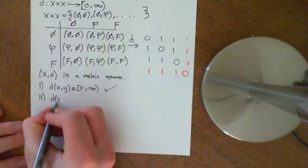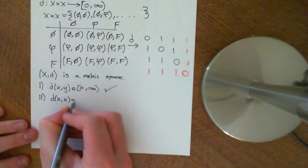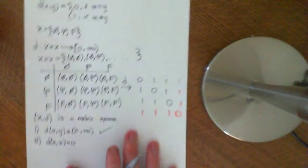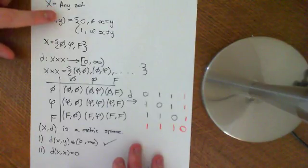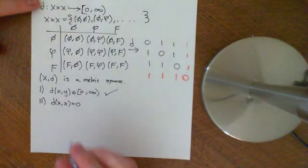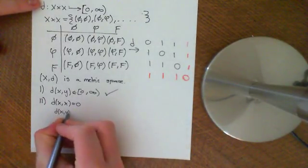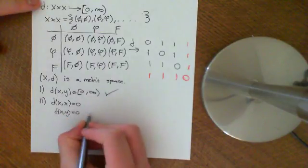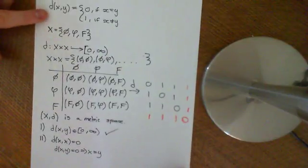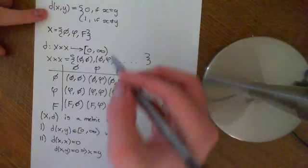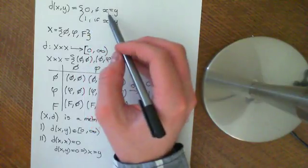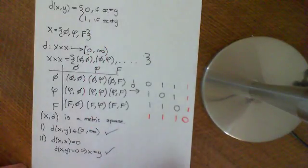Axiom two: if the two points are equal to one another, then the distance is equal to zero — that's just in the definition. And if the distance between x and y is equal to zero, we want to know that x equals y. By contradiction, if x was not equal to y, then the distance would be equal to one. The only way the distance can be zero is if the two points are equal, so axiom two is satisfied.